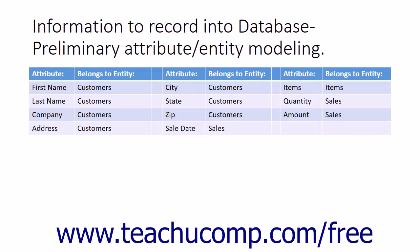Many times when initially approaching data modeling, it may be easier to list the various attributes that you want to record and then try to find what entities those attributes describe. The entities then become the various tables in your database, and the attributes will become the columns or fields within the entity tables. Remember that each attribute or column in your table must share a one-to-one relationship with the subject of the table, or the entity.